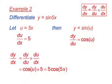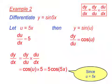And substituting into the chain rule, we get cos u times 5, which is 5 cos of 5x. Again, substituting back for u, which in this case is 5x.